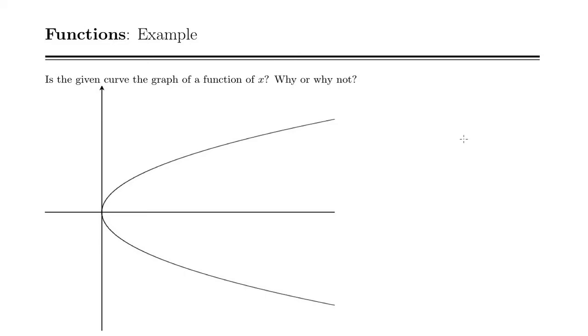To determine if a curve is a graph of a function of x, we apply what's called the vertical line test, where we look at any vertical line. If there's any vertical line that touches the curve more than once, then it is not a function of x.